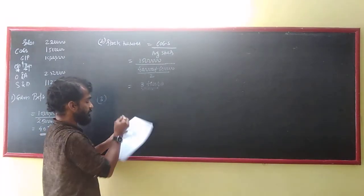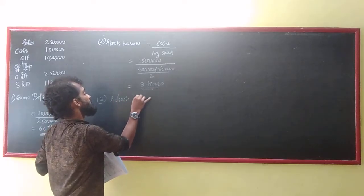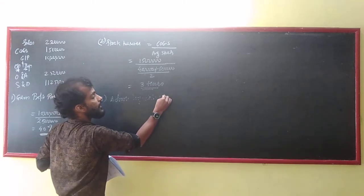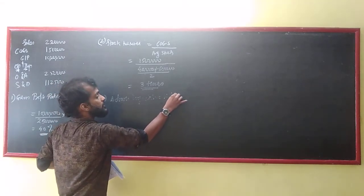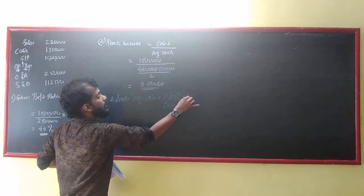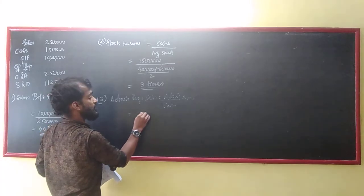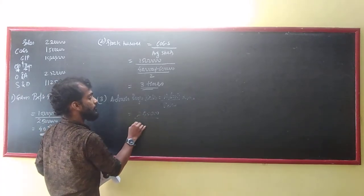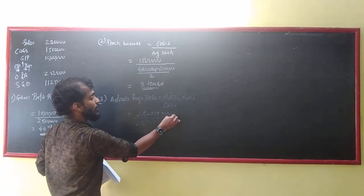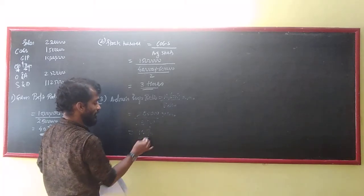Ratio number 3: admin expense ratio. Admin expense ratio equals admin expenses upon sales into 100. Admin expenses are 2,50,000 and sales are 25 lakhs, which gives us 10%.